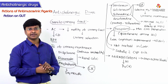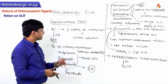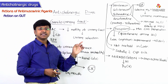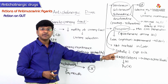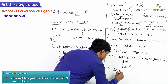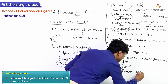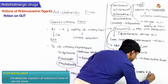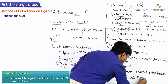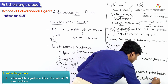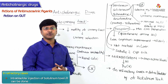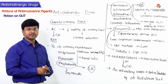In refractory cases of overactive bladder where urinary incontinence persists despite all these drugs, we give an intrabladder injection of botulinum toxin A. This injection is administered directly into the bladder in refractory cases of overactive bladder.